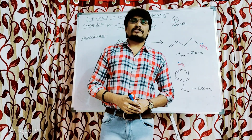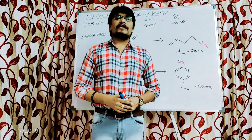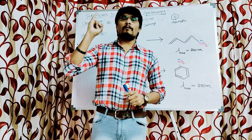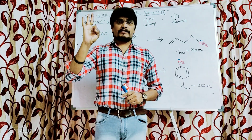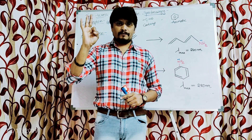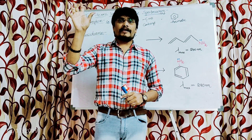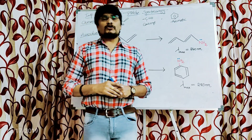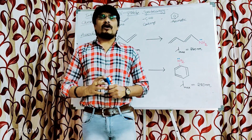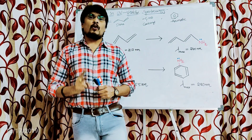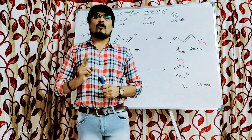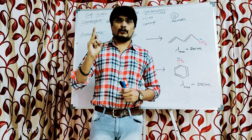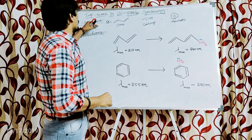As part of UV-visible spectroscopy, I'm going to discuss six very important terms: chromophore, auxochrome, bathochromic shift (red shift), hypsochromic shift (blue shift), hyperchromic shift, and hypochromic shift. Today I am going to focus only on the two important terms: chromophore and auxochrome. So first let us discuss about the chromophore.